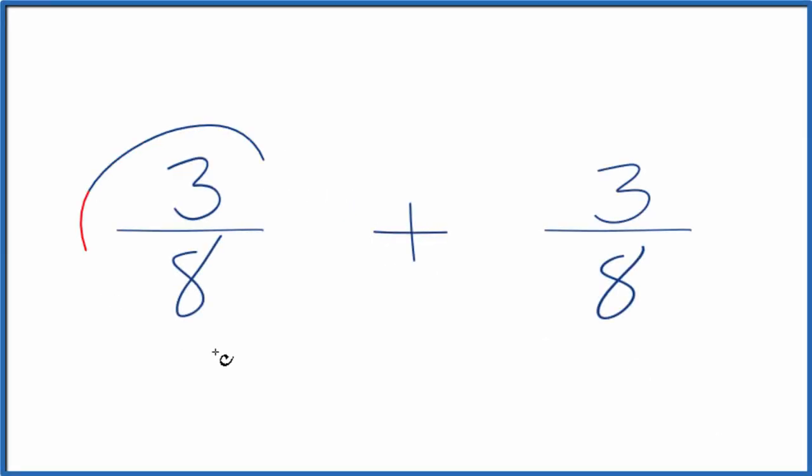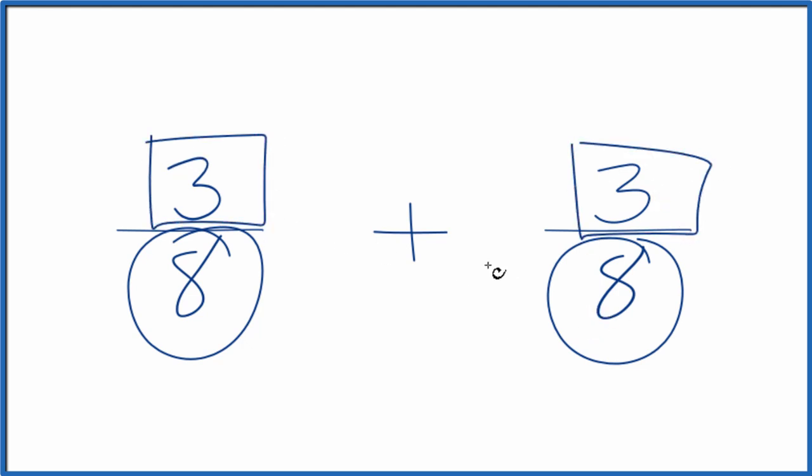If you're asked to add the fractions 3 8ths plus 3 8ths, here's how you do it. When we add fractions, we want to have the denominator the same, because if we have the same denominator, we can just add the numerators together, keep the denominator the same, and we'll have the sum for 3 8ths plus 3 8ths.